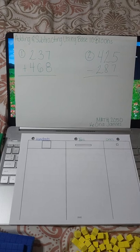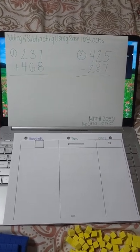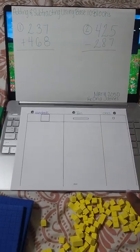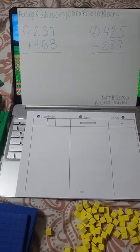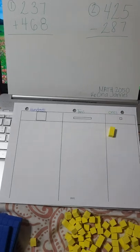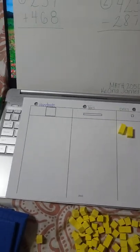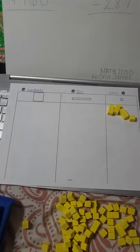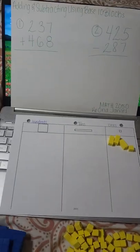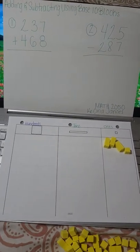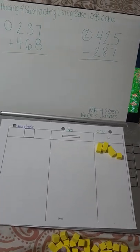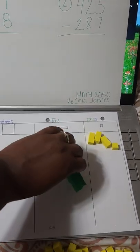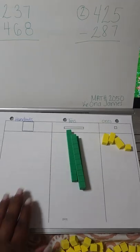To start with problem one, which is 237 plus 468, you need to place the units in the proper place. In our ones, we're going to place seven units — I have two here, four, six, and seven. In our tens unit, we know that they're in our tens place. You notice that there is a three, so that means they have three tens, so we're going to place three of our ten units in that place.